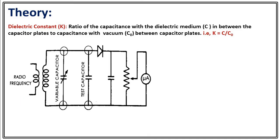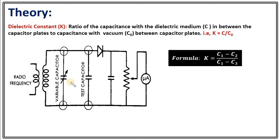In this circuit there is an ammeter that shows maximum current at the resonance point. To achieve resonance, we need a particular value of the variable capacitor. The circuit has two capacitors in parallel configuration, so their capacitances simply add up. We use the formula k equals (C1 minus C2) divided by (C1 minus C3) to measure k.